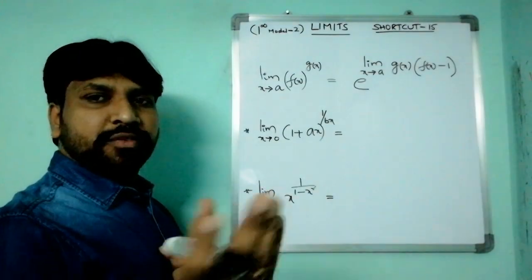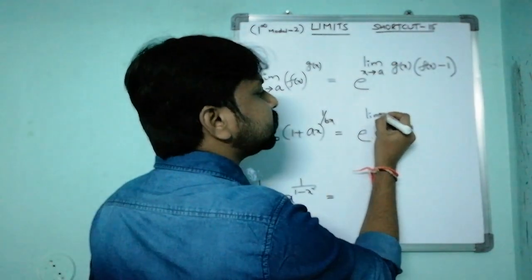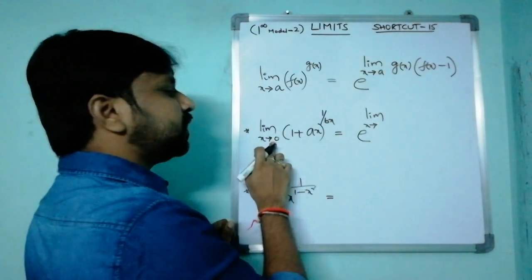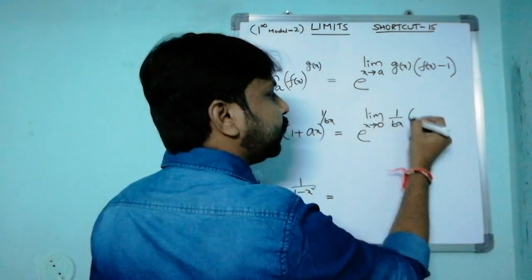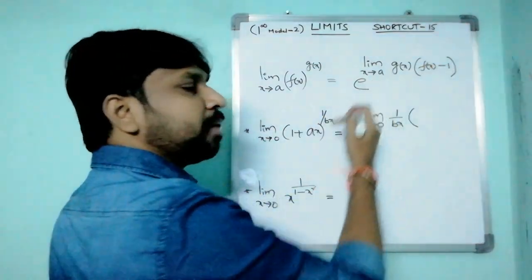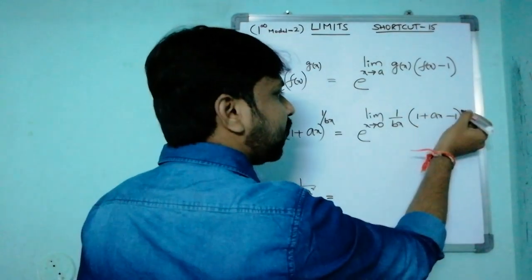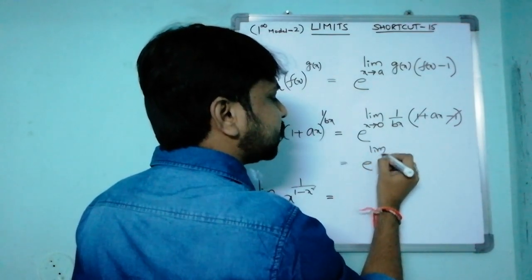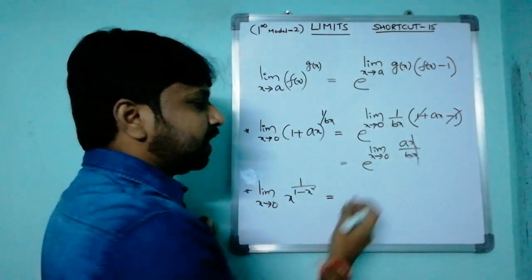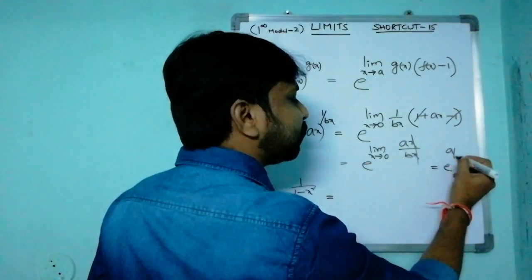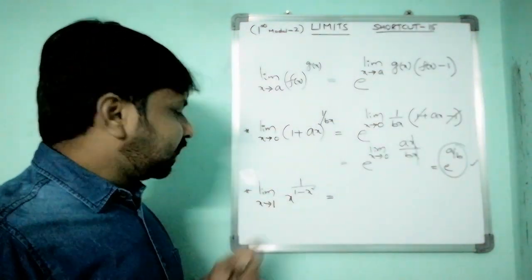For any question in this formation, first write e power, then limit x tends to 0, then the power g(x) which is 1/(bx), multiplied by f(x) minus 1, which is (1 + ax) − 1 = ax. So we get e^[limit x→0 of ax/(bx)]. The x's cancel, and the limit of a constant is that constant, giving the answer e^(a/b).